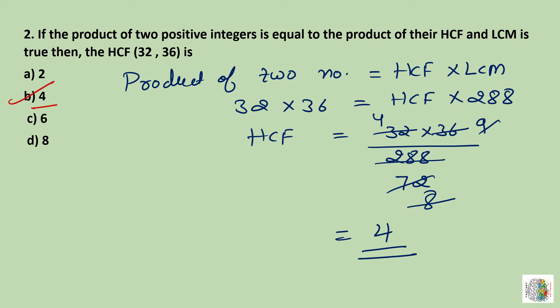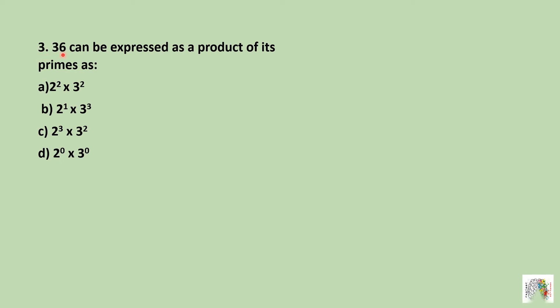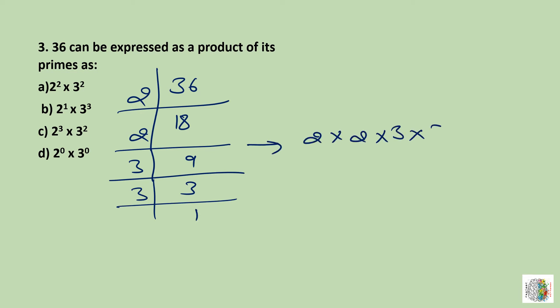Question number three: 36 can be expressed as a product of its primes. We will do the prime factorization of 36. 2 times 18 is 36, 2 times 9 is 18, 3 times 3 is 9, and 3 times 1 is 3. So in prime factorization we get 2 times 2 times 3 times 3. 2 appears 2 times, so we get 2 square, and 3 appears 2 times, so we get 3 square. Therefore 36 equals 2 square times 3 square, and option A is correct.